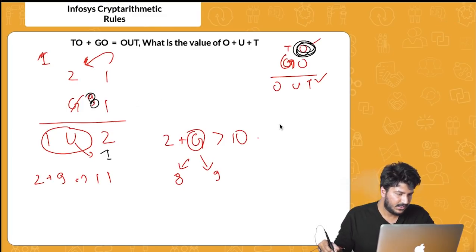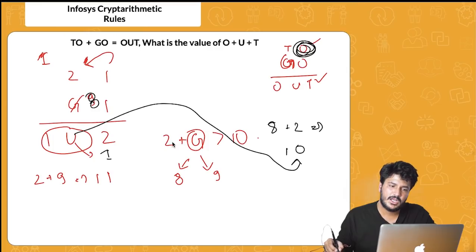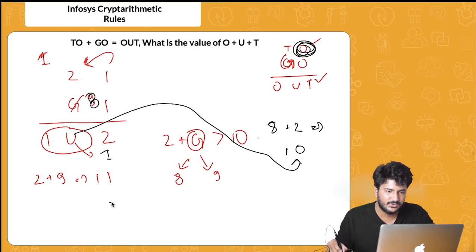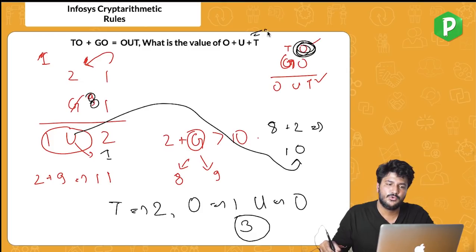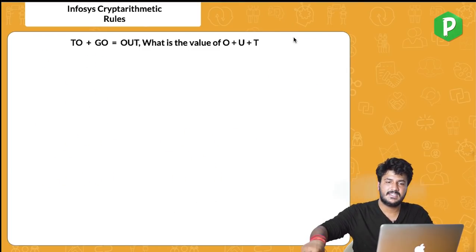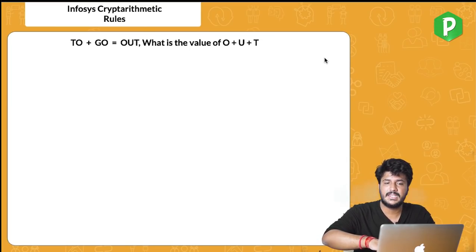So G equals 8: 8 plus 2 equals 10, meaning U equals 0, which is unoccupied. We've now found all values: T=2, O=1, U=0. Therefore O plus U plus T equals 1 plus 0 plus 2 equals 3. That's the answer to the first question.